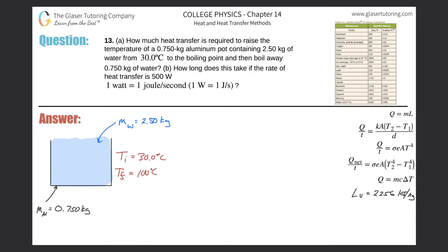Number 13, letter A: How much heat transfer is required to raise the temperature of a 0.75 kilogram aluminum pot containing 2.5 kilograms of water from 30 degrees Celsius to the boiling point, and then boil away 0.75 kilograms of water?